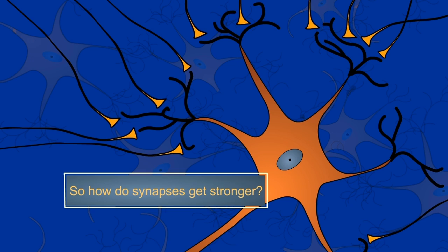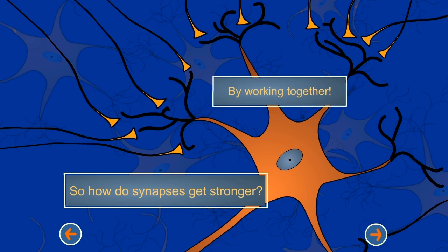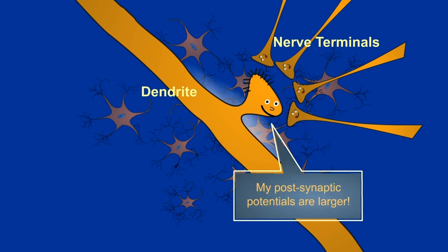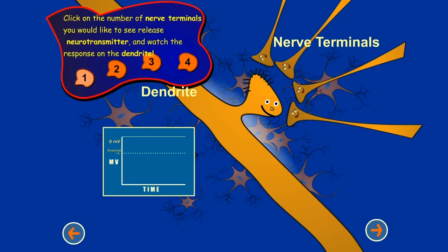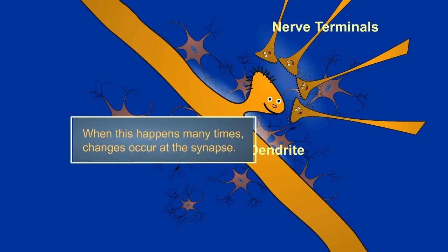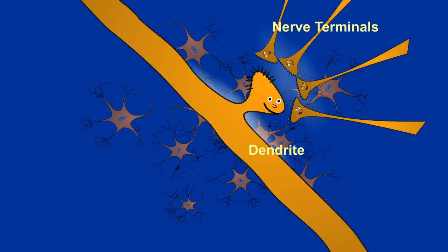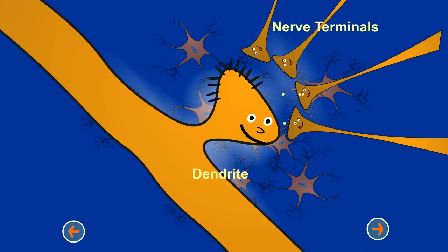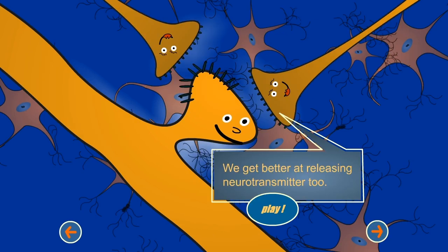So how do synapses get stronger? By working together. If we release our neurotransmitter at the same time, my postsynaptic potentials are larger. When this happens many times, changes occur at the synapse. I make more receptors to taste all that neurotransmitter. We get better at releasing neurotransmitter, too.